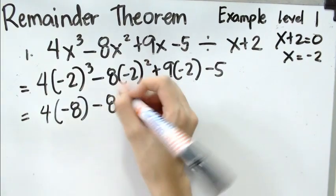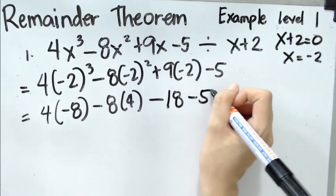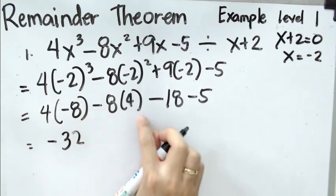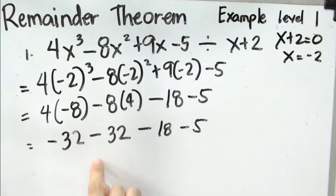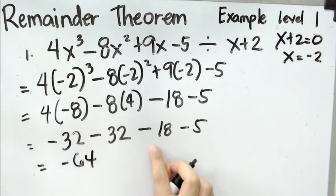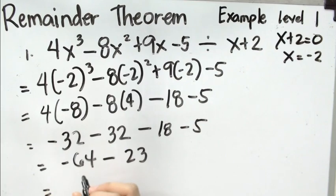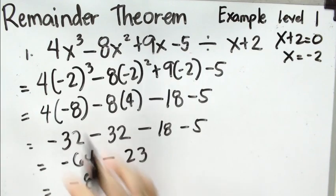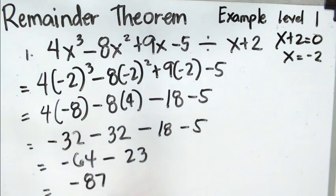Negative 2 times negative 2 is positive 4. 9 times negative 2 is negative 18, minus 5. So: 4 times −8 is −32, minus 8 times 4 is −32, minus 18, minus 5. Negative 32 minus 32 is −64; negative 18 and negative 5 is −23. Adding it all together, we get negative 87. Therefore, the remainder of 4x³ minus 8x² plus 9x minus 5 divided by x plus 2 is negative 87.